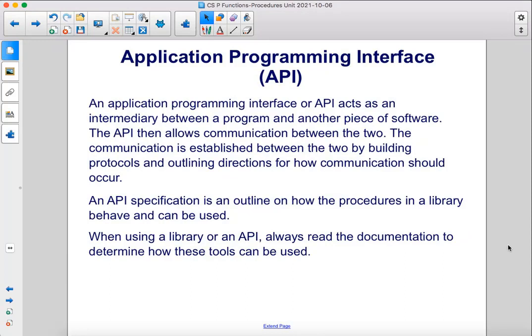An Application Programming Interface, or API, acts as an intermediary between a program and another piece of software. The API then allows communication between the two. The communication is established between the two by building protocols and outlining directions for how communication should occur. An API specification is an outline on how the procedures in a library behave and can be used.